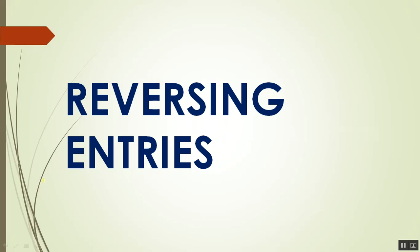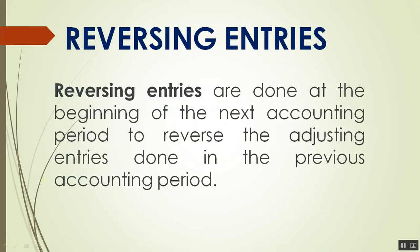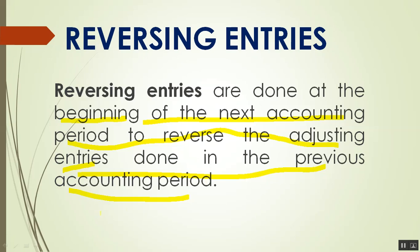Next topic is reversing entries. Reversing entries are done at the beginning of the next accounting period to reverse the adjusting entries made in the previous accounting period. Literally, we reverse the adjusting entries because we want our journal entries to be uniform every time we pay or every time we have a transaction — for example, payroll. That is why we reverse accruals.